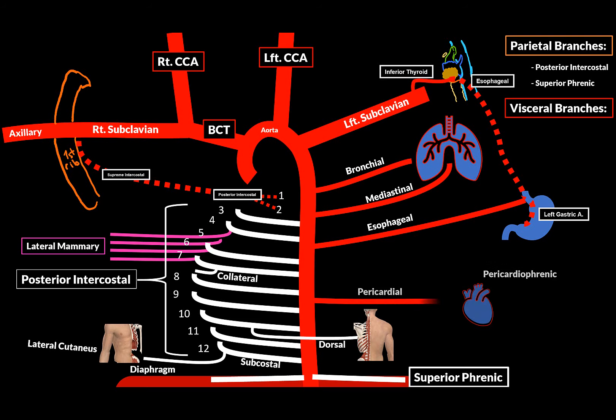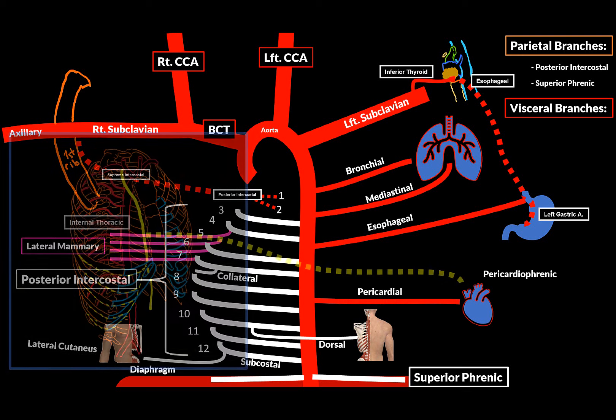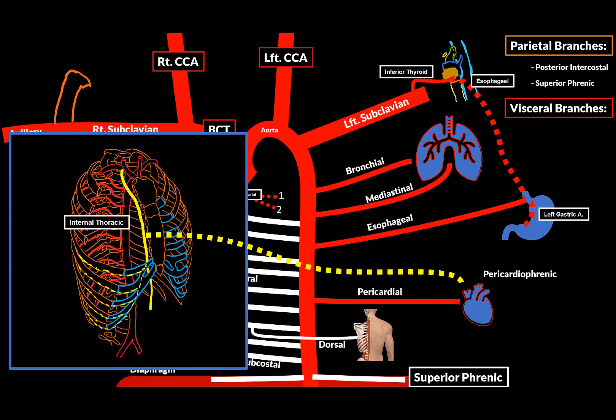The last branch is the pericardial branch, supplying the pericardium, together with the pericardial branch of the internal thoracic artery. That's all for the thoracic aorta. I really hope you found this video useful to understand this topic. See you next time.